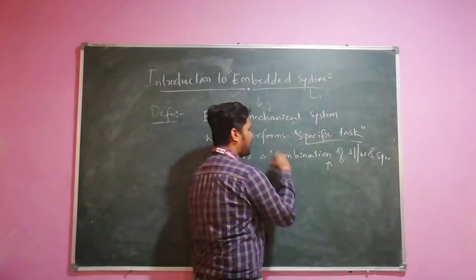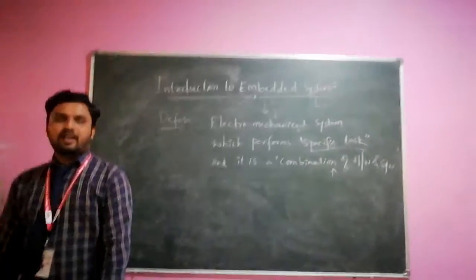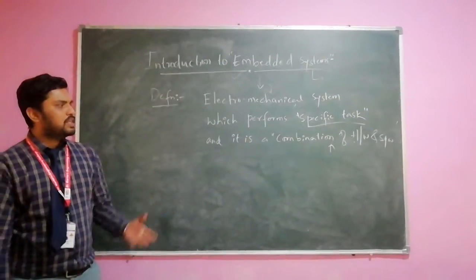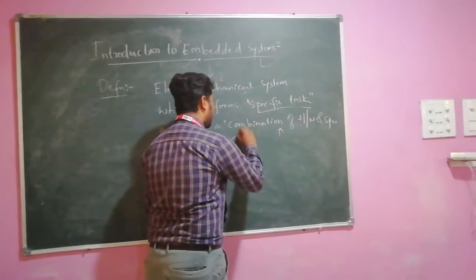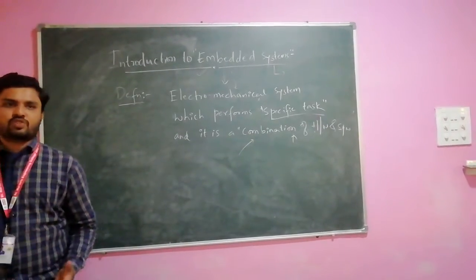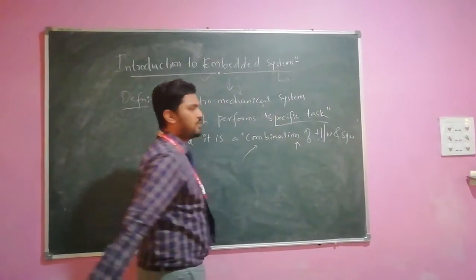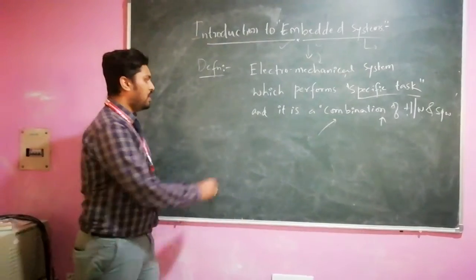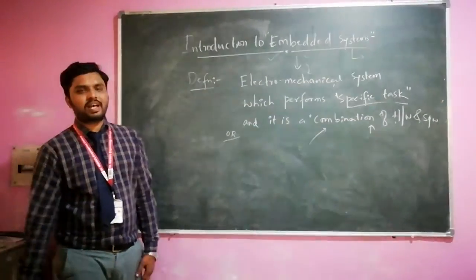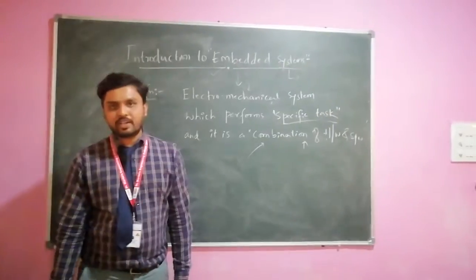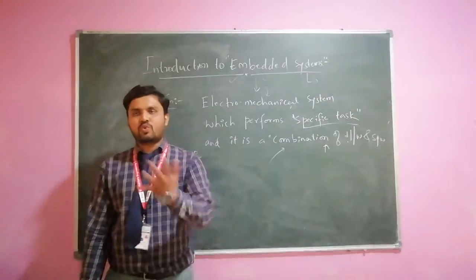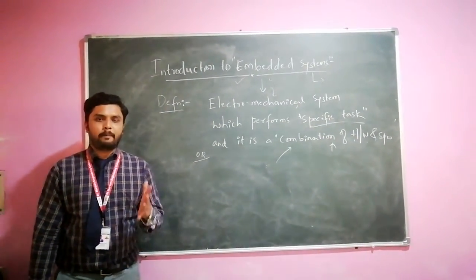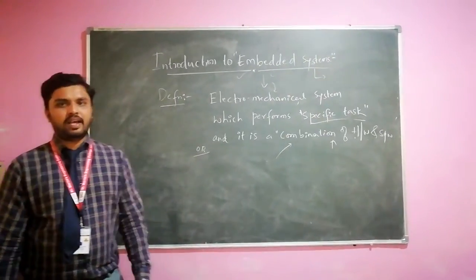Most people get confused with this definition — they say an embedded system is just a combination of hardware and software, but that is not correct. The combination of hardware and software alone doesn't make an embedded system. There should be specialized hardware and specialized software performing a particular or unique task. Alternatively, any device which has a programmable computer but is not itself intended to be a general computer is an embedded system.